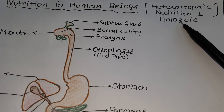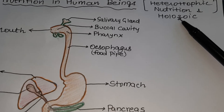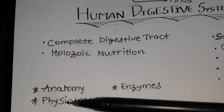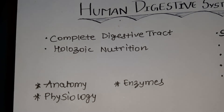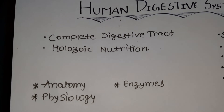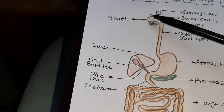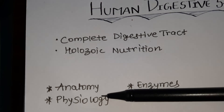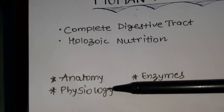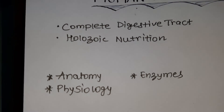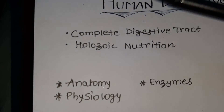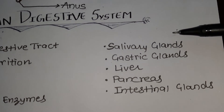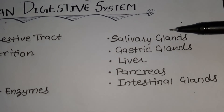Under nutrition in human beings, we are going to discuss basically two things. First is anatomy — the study of internal organs. We will discuss the complete digestive tract and the structure of the human digestive system. Second is physiology, which means the working of internal organs — how internal organs perform their functioning. For physiology, we will specifically discuss the various glands associated with the human digestive system.